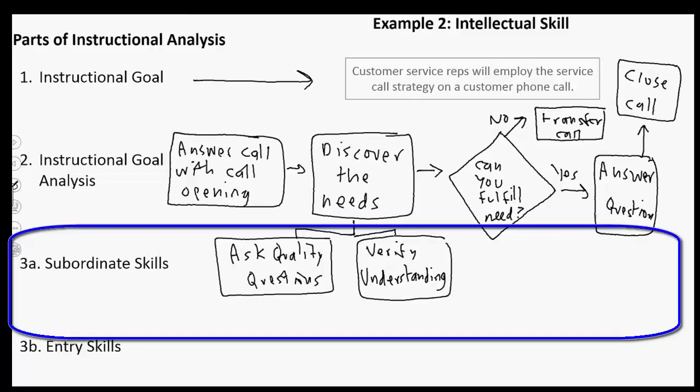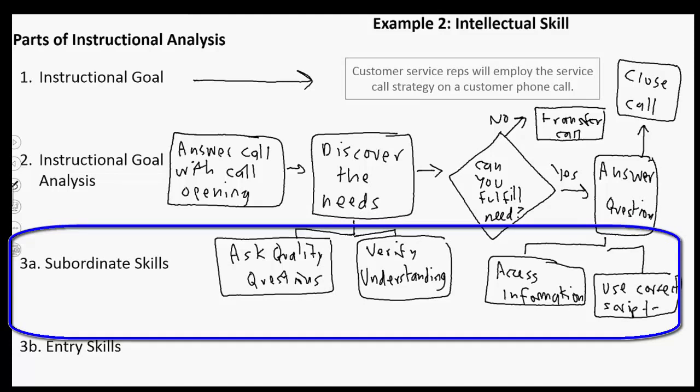Let's see, what else could we look at here? Answering the question. That might have a few different subordinate skills. So one of them might be just accessing the information. Another might be use the correct script. Maybe there's some kind of a script that you use when you answer certain types of questions. And that's part of the call strategy that we talked about above. So you start to break it down into these different subordinate skills.